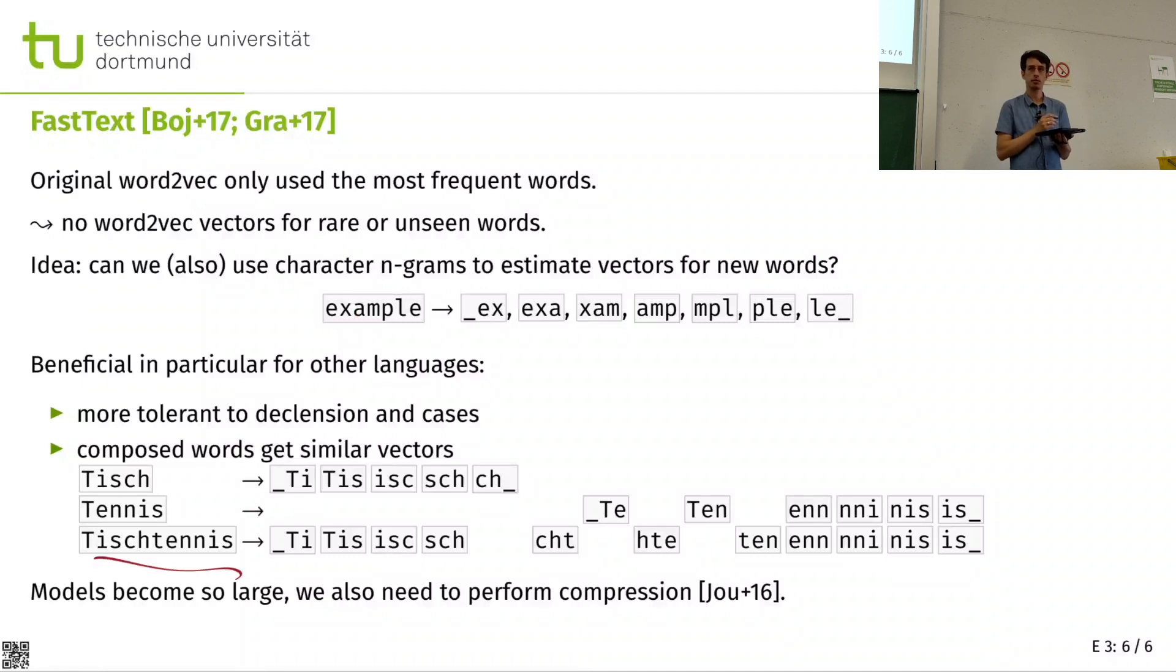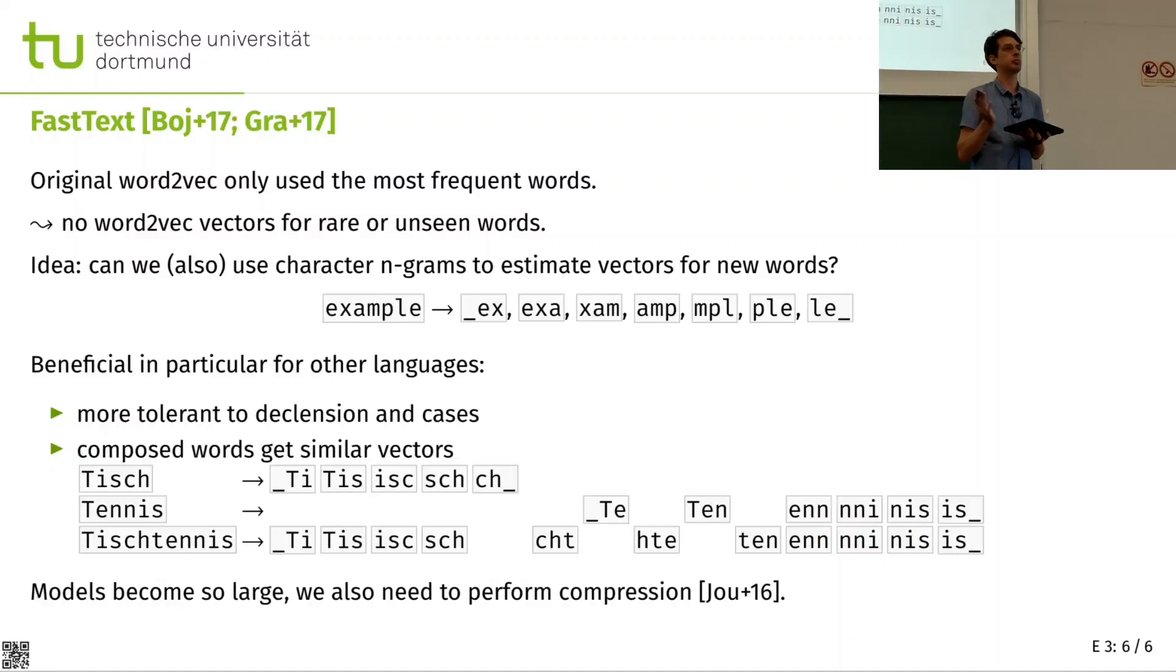That means we have _ex, exa, xam, amp, mpl, ple_, and so on. We do want some placeholder padding values in here to get more of them and to capture the beginning of the word better. And now we can exploit that if you have a compound word such as Tischtennis, which is table tennis, it shares a lot of n-grams with Tisch and Tennis. So it ends up that if Tischtennis is an unseen word, the vector will be approximately the average of Tisch and Tennis. And that is quite decent. That will match human intuition of these compound words quite well.